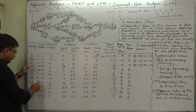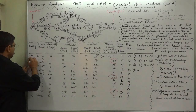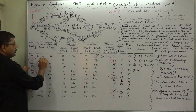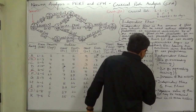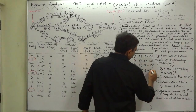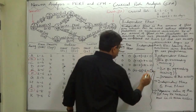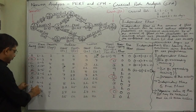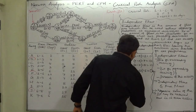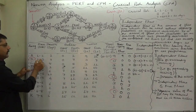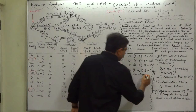Activity D (2,5): its successor is I, whose earliest start time is 13. The predecessor of D is A, and A's latest finish time is 11. So: 13 minus 11 minus duration of D (3) equals minus 1. Since negative independent float is taken as 0, independent float of D is 0. For activity E (3,5): its successor is I with earliest start time 13. Predecessor's latest finish time is 7. So: 13 minus 7 minus duration of E (6) equals 0.